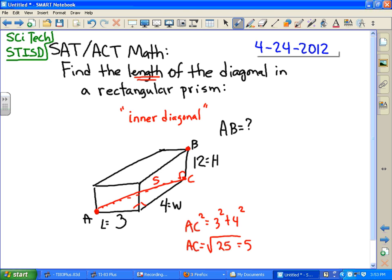And then we have another right triangle that is ACB. So we're looking for the length of AB. So now we're going to have AC squared plus BC squared is equal to AB squared.